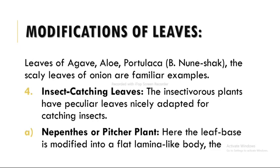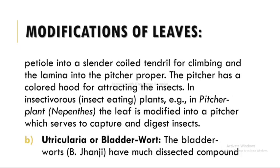The next modification is insect-catching leaves. Insectivorous plants have peculiar leaves adapted for catching insects. The first example is Nepenthes, the pitcher plant. Here the leaf base is modified into a flat lamina-like petiole, the petiole into a slender coiled tendril for climbing, and the lamina into the pitcher proper. The pitcher has a colored hood for attracting insects.